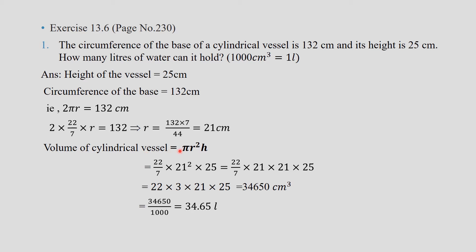Now let us find the volume of the vessel: pi r square h = 22/7 into 21 squared into 25. After cancellation, the answer is 34,650 centimeter cube. To convert to liters, divide 34,650 by 1000. Our answer is 34.65 liters.